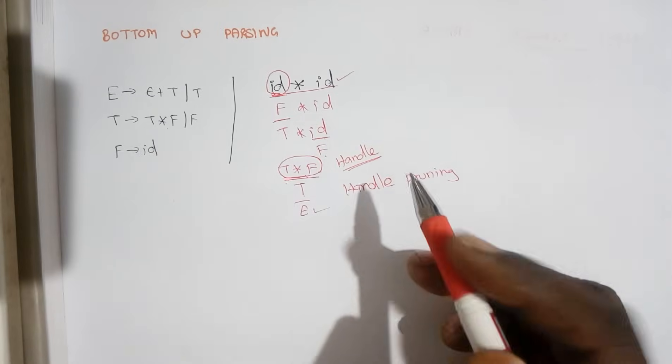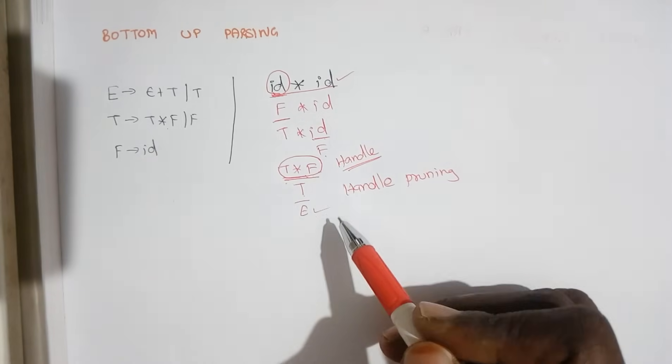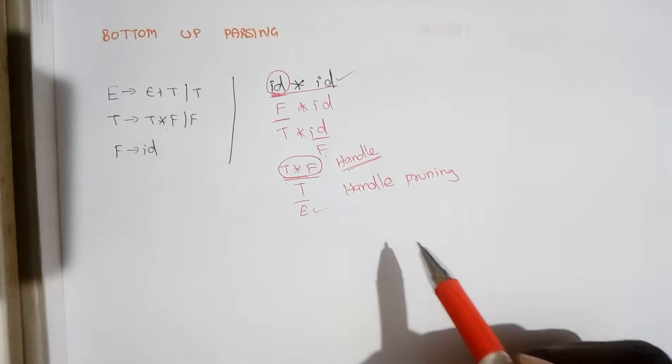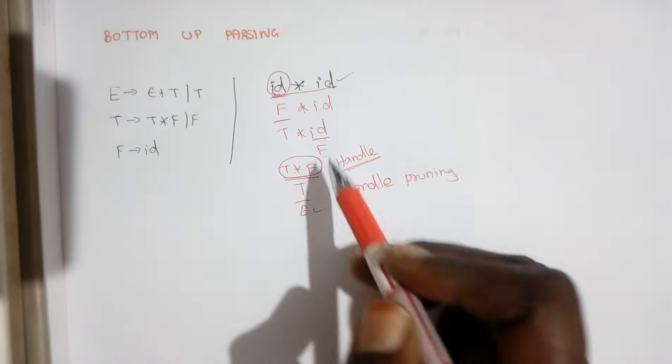Handle pruning is by applying handle and reducing all the things and finally it derives to a starting symbol. So this is called handle pruning and here we have reduced it. When you write it in the reverse way,